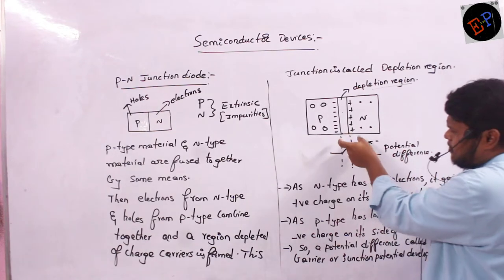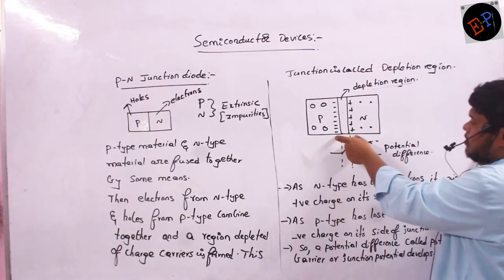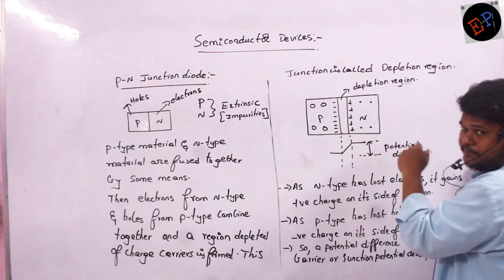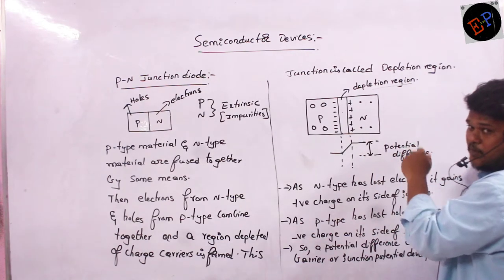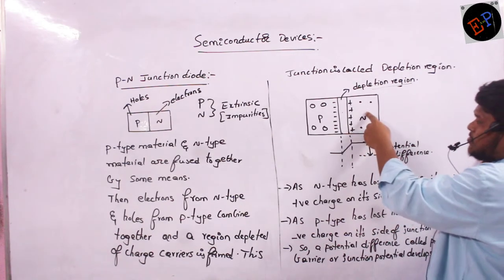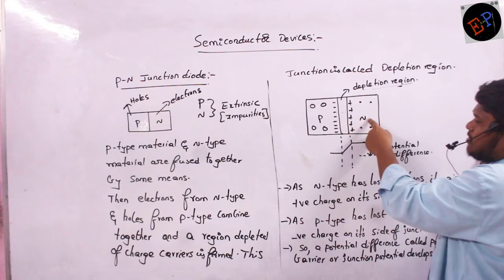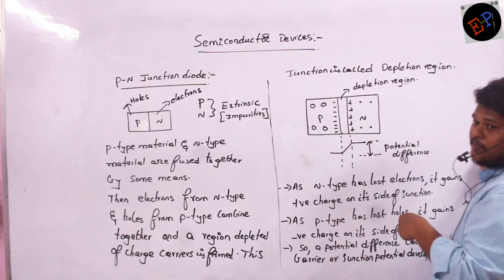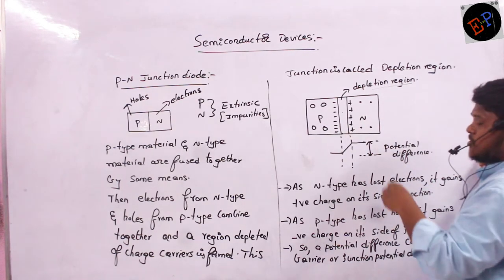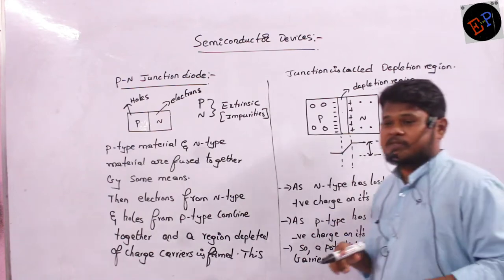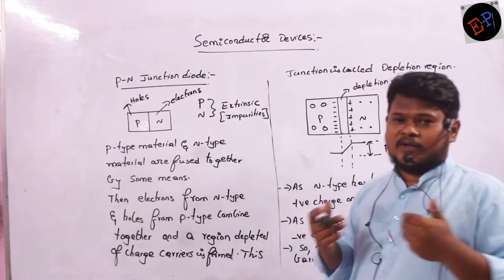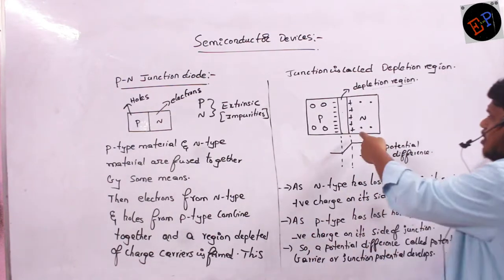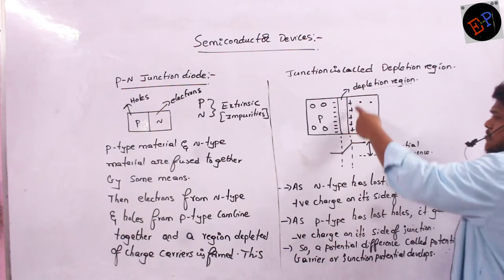For forming this depletion region, the N-type semiconductor has lost electrons. Electrons carry negative charge. If you lose negative charge, what happens? You gain a positive charge. So on the N-side, positive charge develops.